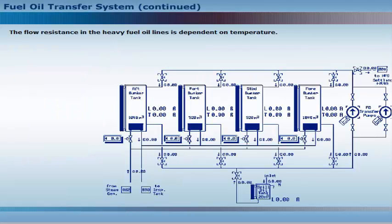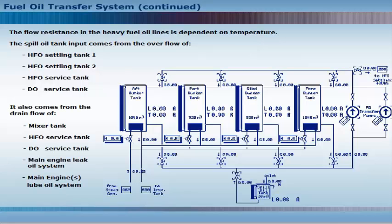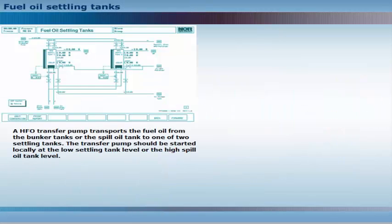The flow resistance in the heavy fuel oil lines is dependent on temperature. The spill oil tank receives input from the overflow of heavy fuel oil settling tank number one, settling tank number two, heavy fuel oil service tank, and diesel oil service tank. It also comes from the drain flow of the mixer tank, heavy fuel oil service tank, diesel oil service tank, main engine leak oil system, and main engine lube oil system. A heavy fuel oil transfer pump transports the fuel oil from the bunker tanks or the spill oil tank to one of two settling tanks.